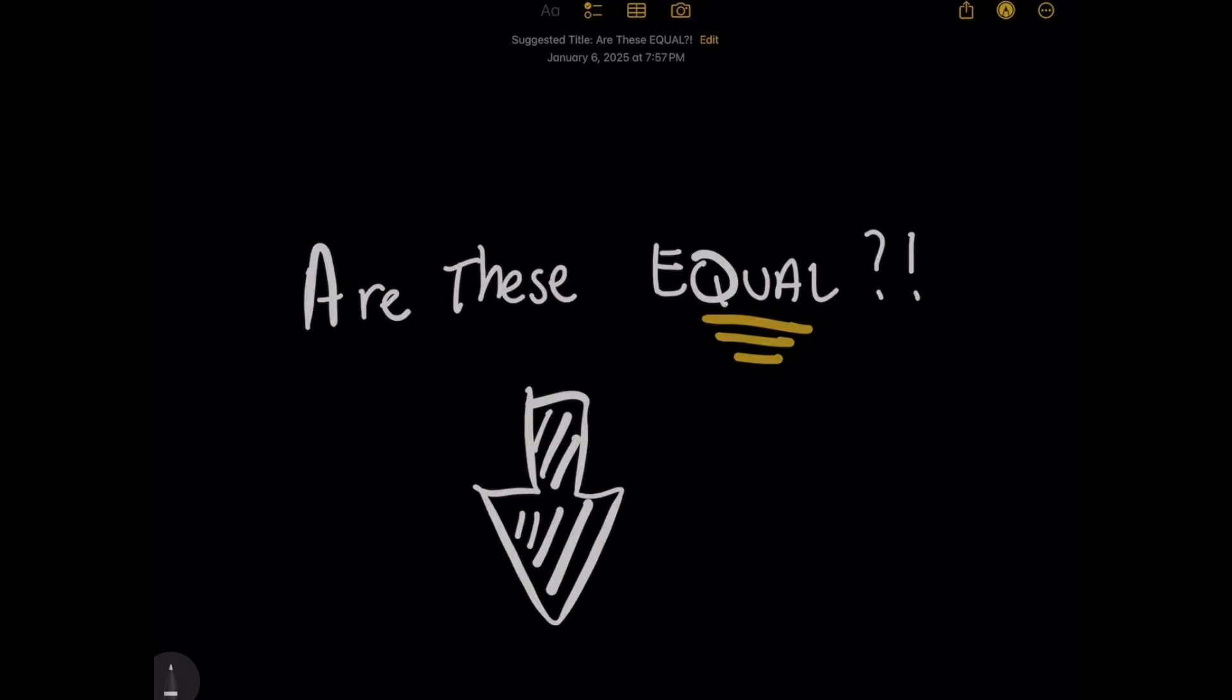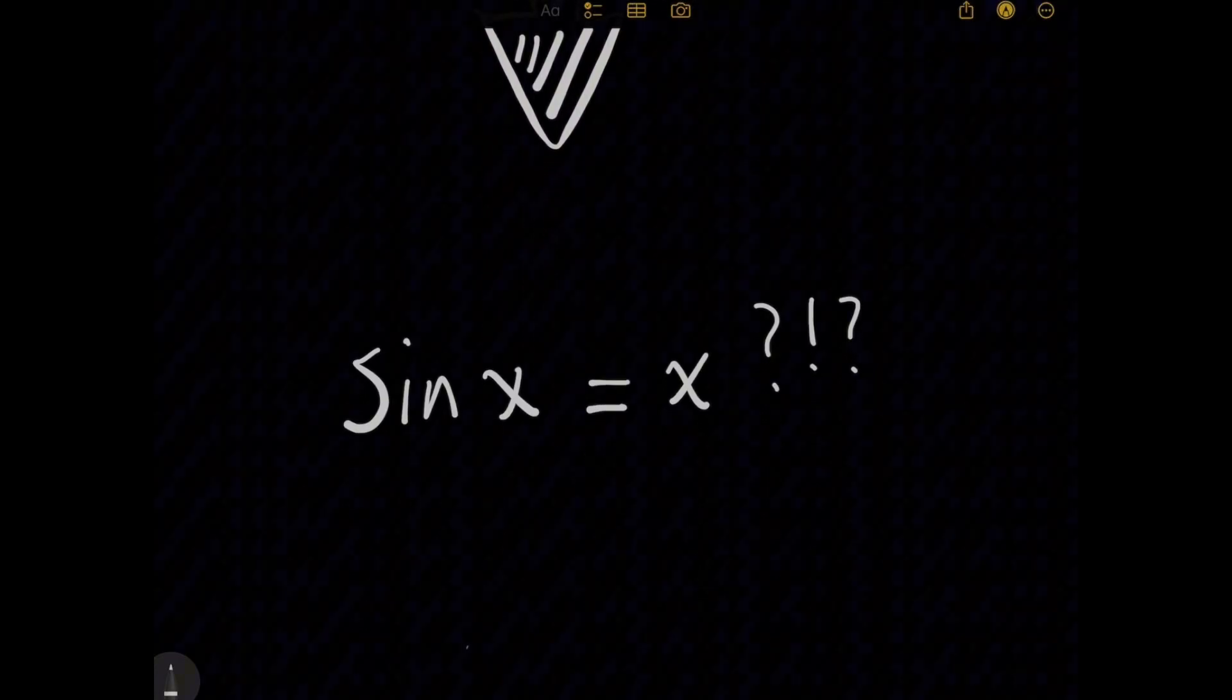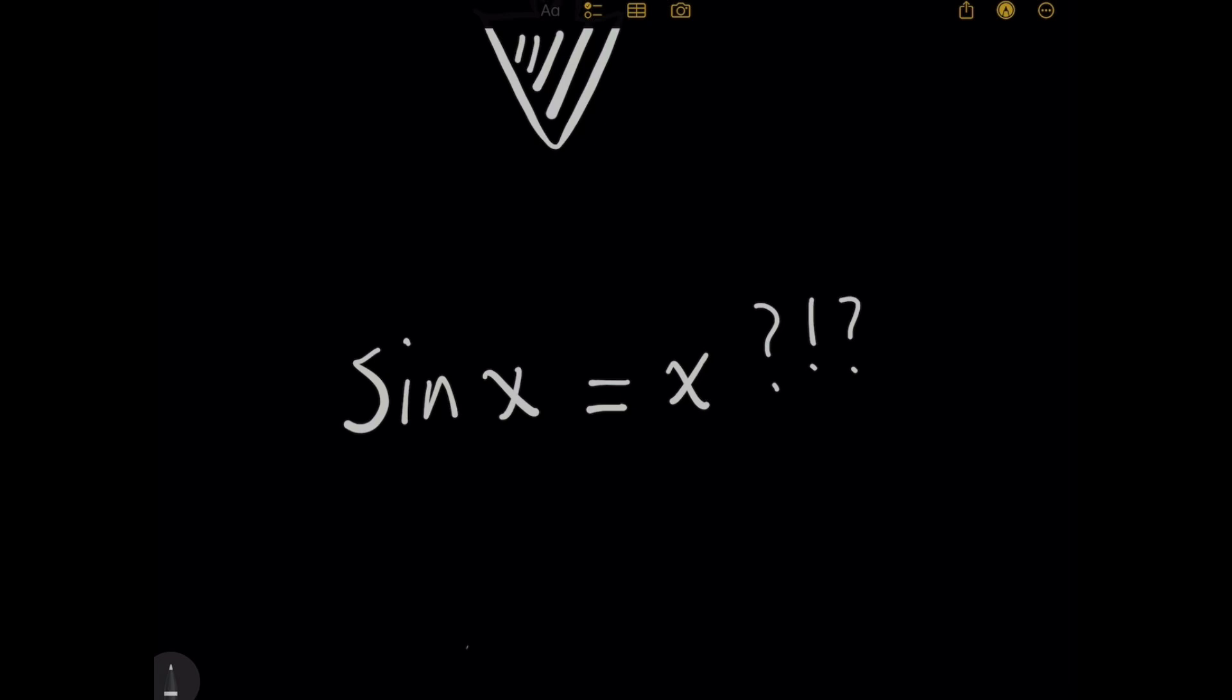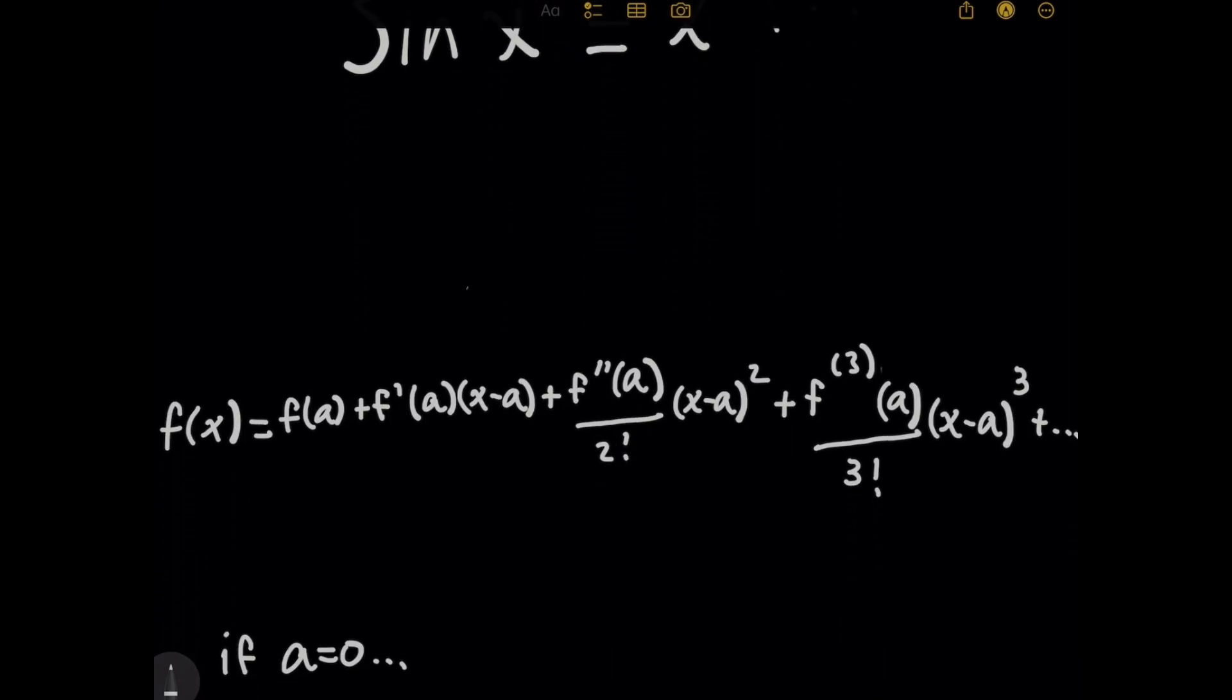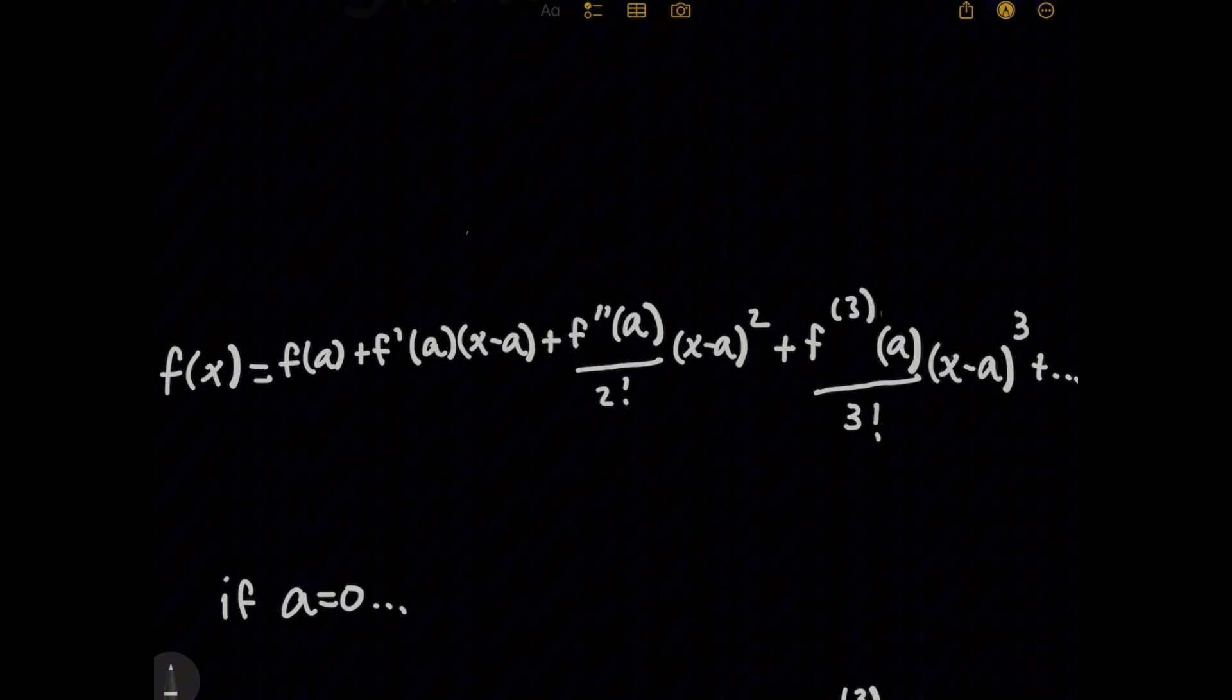You wonder why for some math problems, people will claim that sine of x equals x? I mean, really, come on, making a curve equal a line? Well, maybe they're onto something, and I'm going to approach this question using a method known as finding the Taylor series of a function.